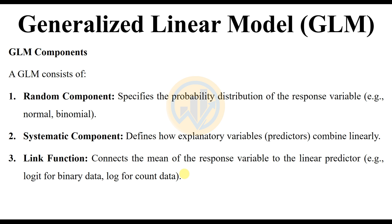The random component specifies the probability distribution of the response variable, such as normal or binomial. The systematic component defines how the explanatory predictor variables combine linearly. The link function connects the mean of the response variable to the linear predictor — for example, logit for binary data and log for count data.